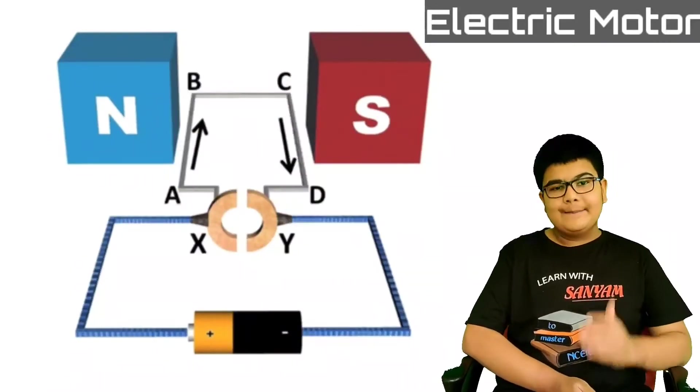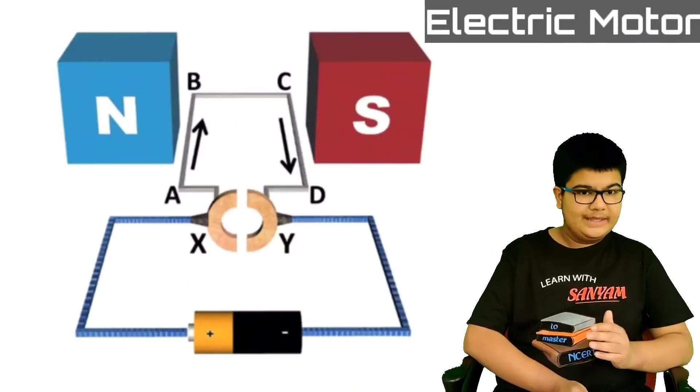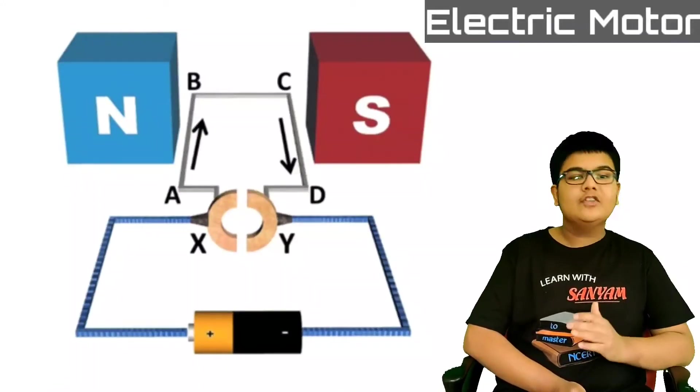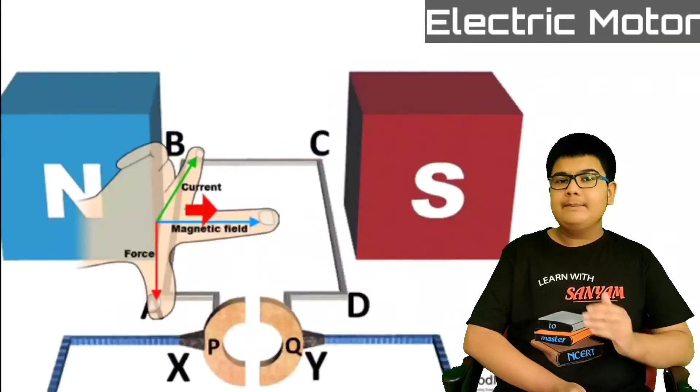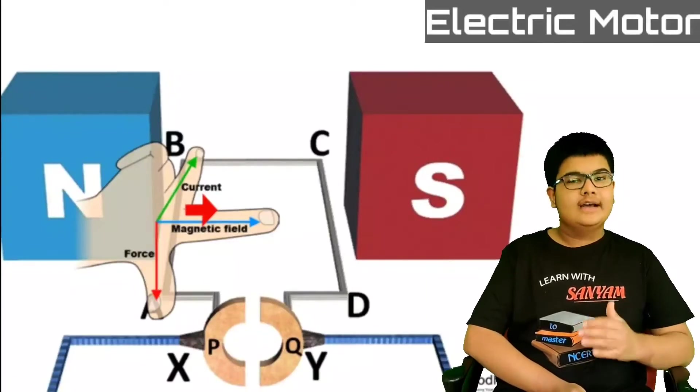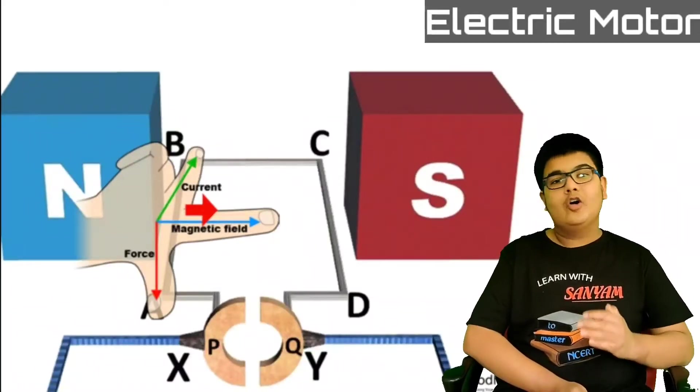In arm AB of the coil, the current flows from A to B. While in arm CD of the coil, current flows from C to D. Let's apply Fleming's left hand rule on arm AB and arm CD of the coil.